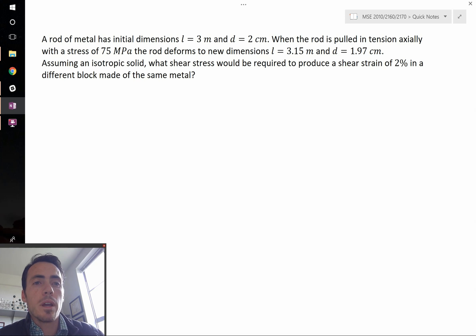The problem states that a rod of metal has initial dimensions: length 3 meters, diameter 2 centimeters. We're told that the rod is pulled in tension axially, so that's along the length of the rod, with a stress of 75 megapascals. Then we're told what the new dimensions are after it's deformed. It's now 3.15 meters long, but the diameter is reduced to 1.97 centimeters.